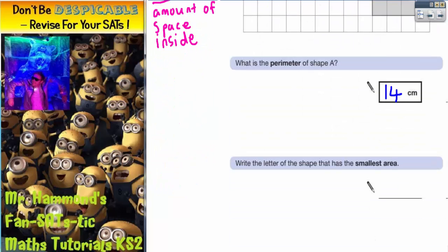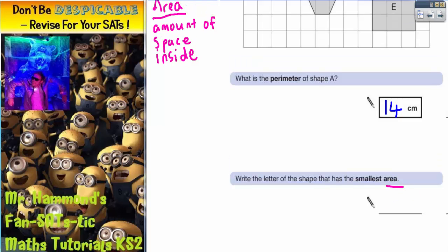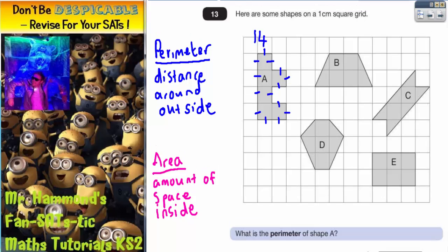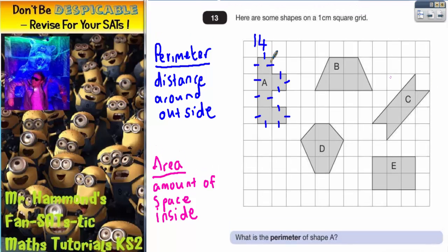Now we need to write the letter of the shape that's got the smallest area. So area is the amount of space on the inside of the shape. So let's count. So shape A, we've got 1 square, 2, 3, 4, 5, 6. So the area of shape A looks like it's 6.